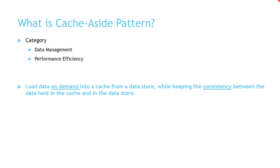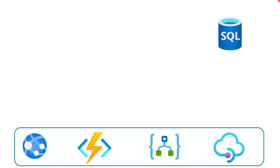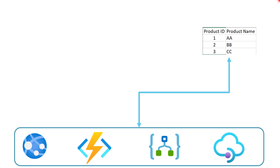Now let's go to the scenarios to understand the Cache-Aside Pattern better. Let's say that we have built our system based on serverless architecture, and our application layer could be anything like Azure App Service, Functions App, Logic Apps, or even API Management. The data is stored in a SQL database, and there is communication required between the application layer and the data layer. This is a sample of the data stored in the data store.